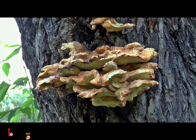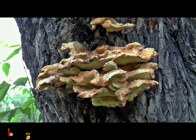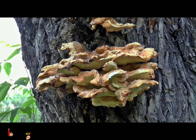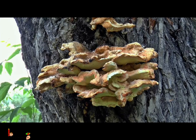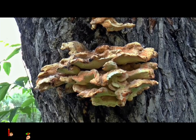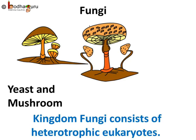Next is kingdom Fungi. They are heterotrophic eukaryotes which get nutrition from decaying substances. Hence, they are also called saprophytes. Their cell has a tough cell wall made from a sugar called chitin. Many of them can be multicellular at certain stages of their lives. For example, yeast and mushroom belong to kingdom Fungi. In short, kingdom Fungi consists of heterotrophic eukaryotes.